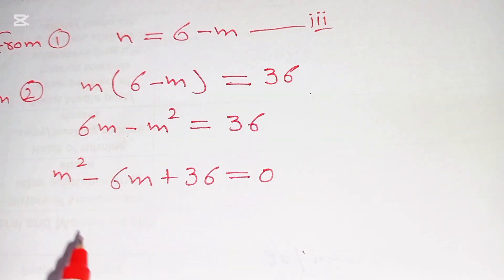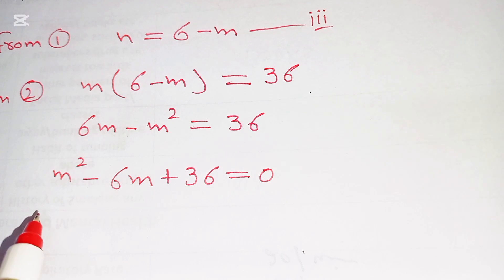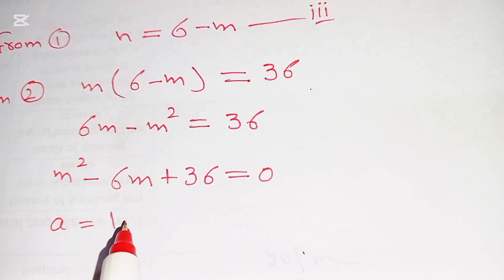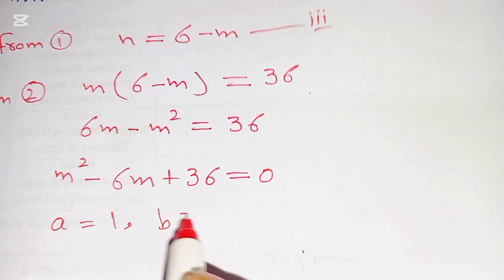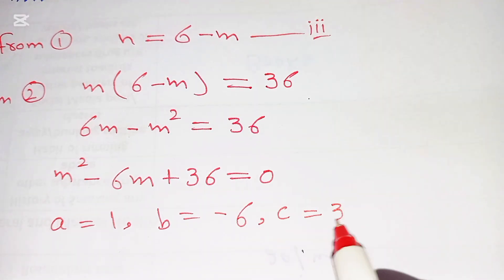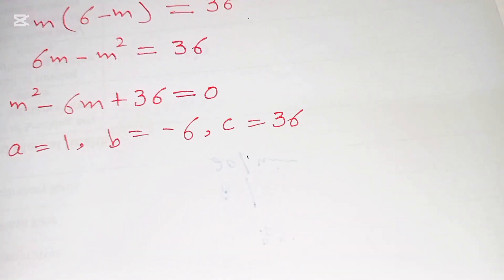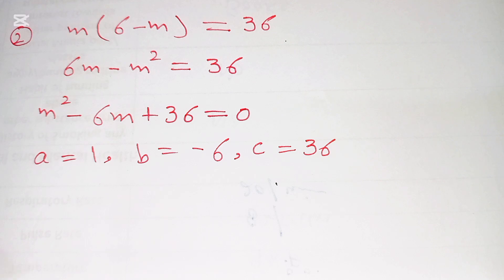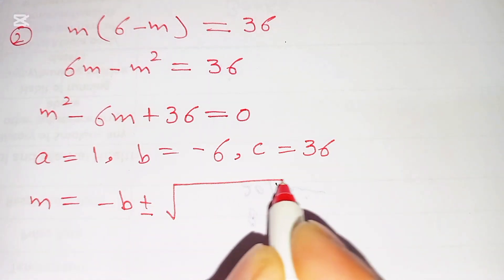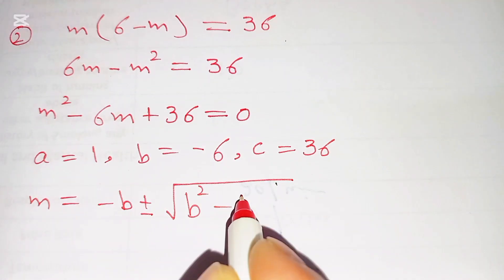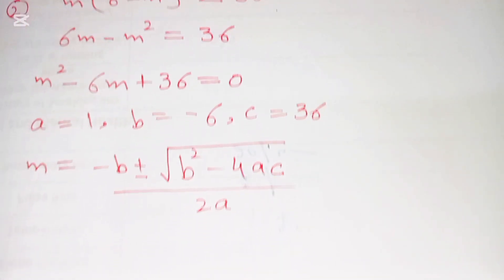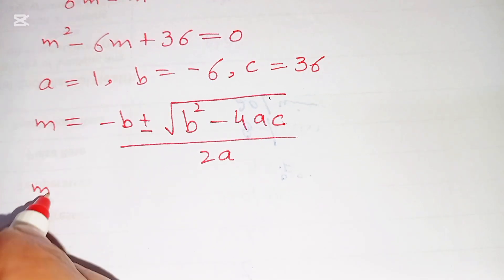Now we solve this quadratic using the quadratic formula. Here a equals 1, b equals negative 6, and c equals 36. The formula is m equals negative b plus or minus square root of b squared minus 4ac, all over 2a.